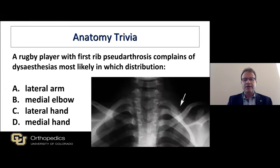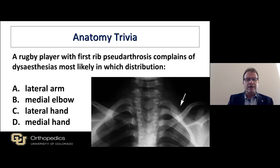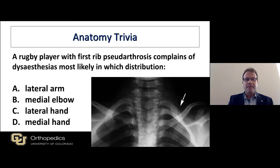I'm going to start here because I do have an interest in nerve. For anyone — you can raise your hand or select A, B, C, or D — this is a rugby player with a first rib pseudarthrosis, and the question is which distribution the dysesthesias fall into.